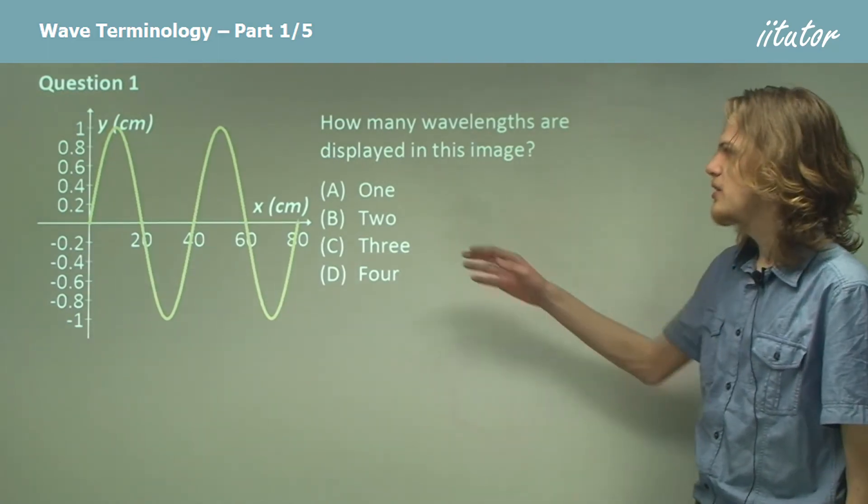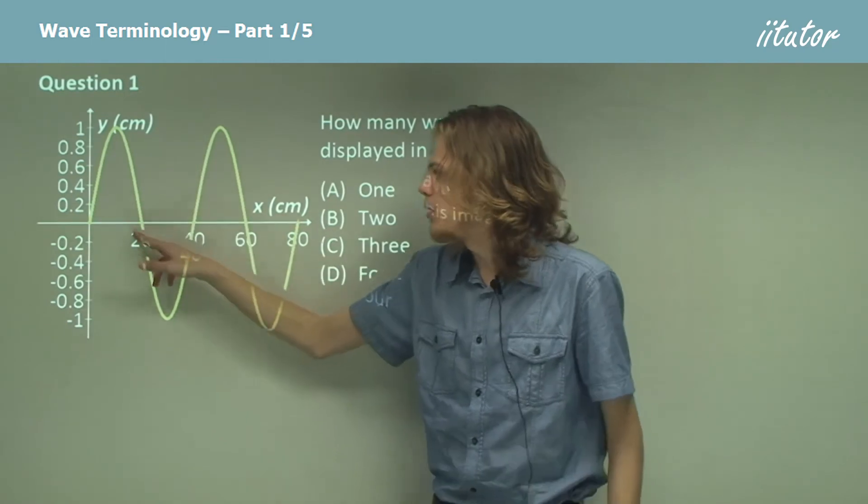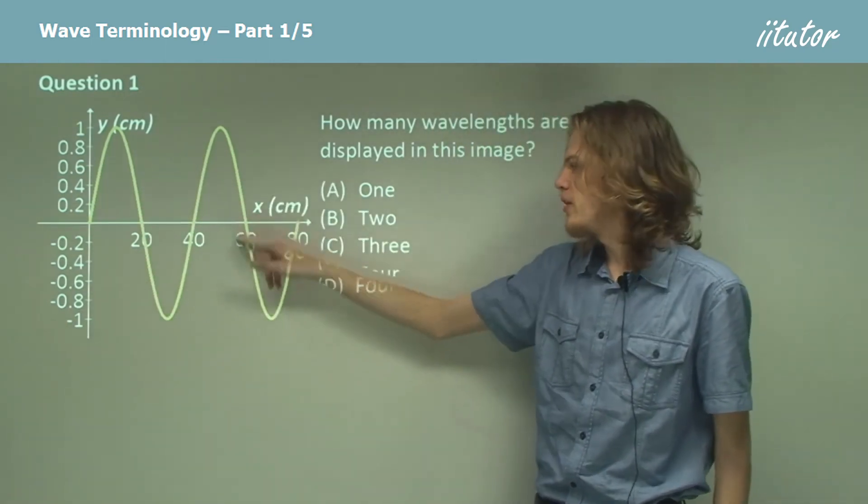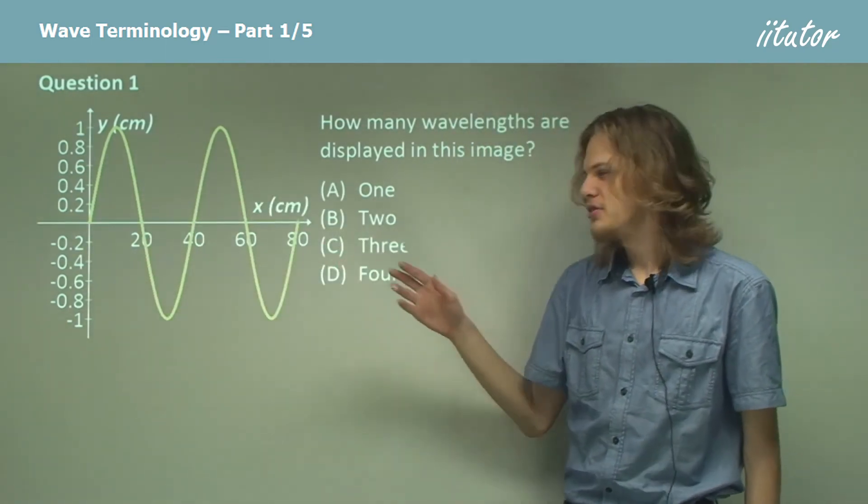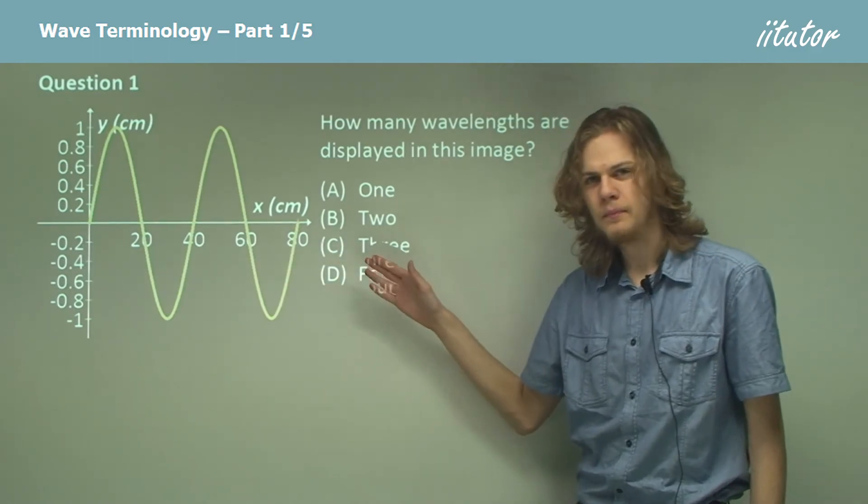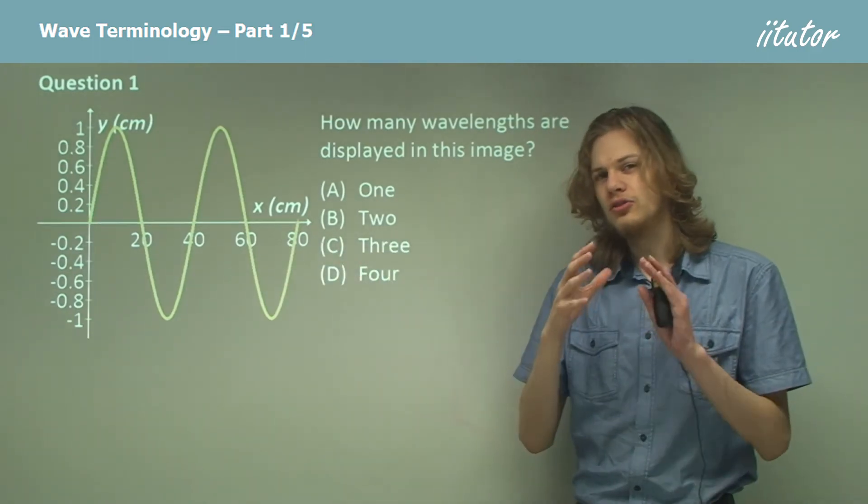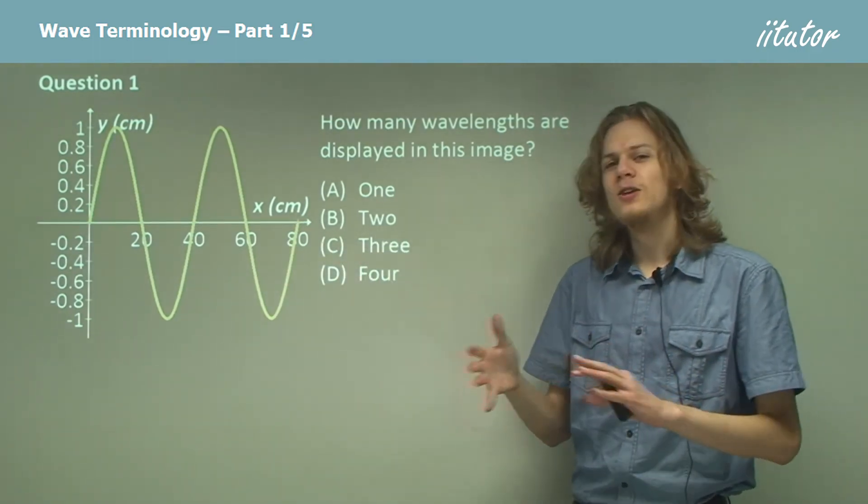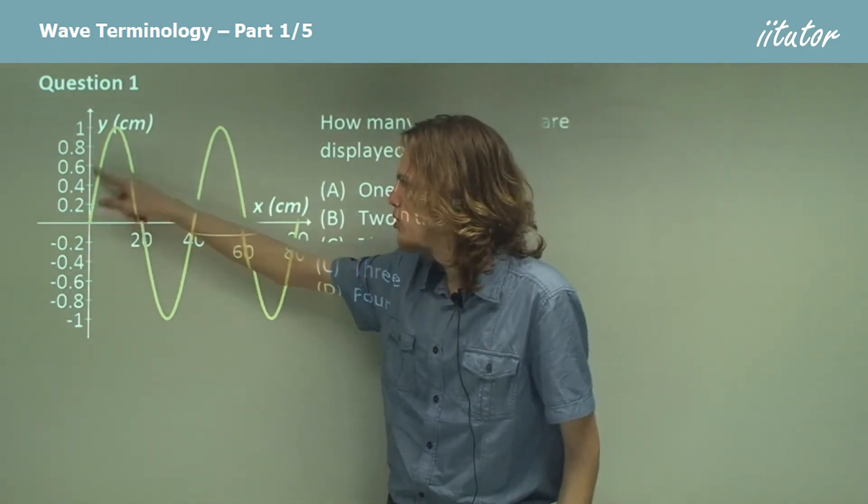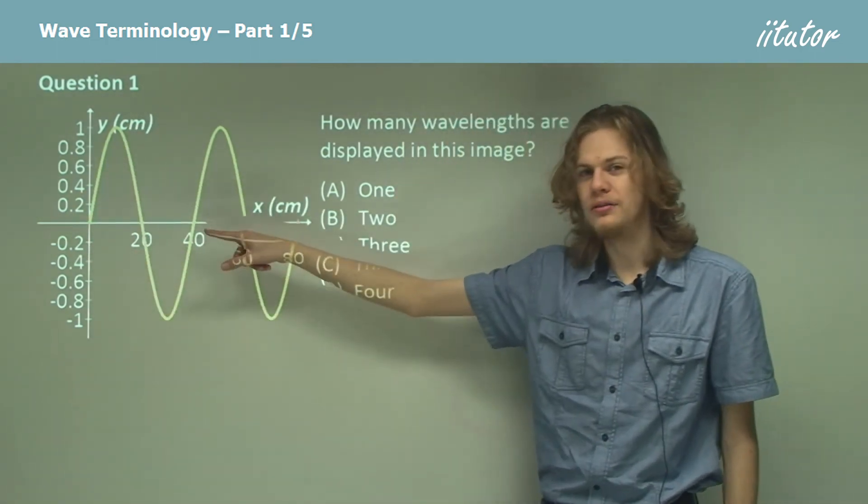We can see that we have a bump over here and a bump at the bottom and a bump at the top and then a bump at the bottom. But this is not four wavelengths. One single wavelength is the entire repeated pattern, so that's one bump going up and one bump going down.